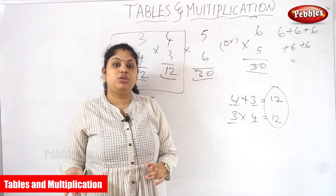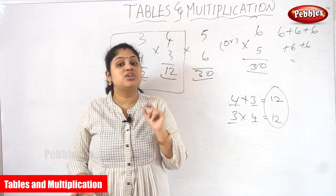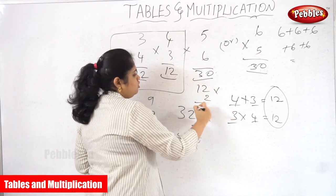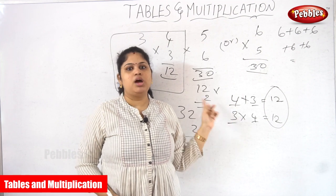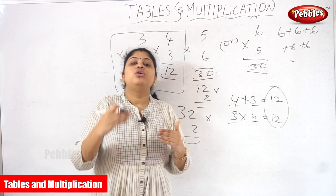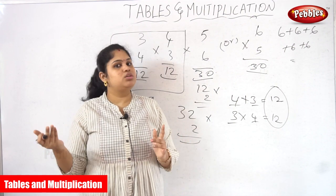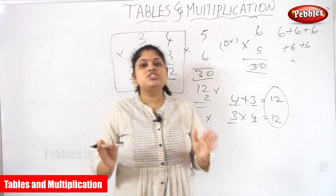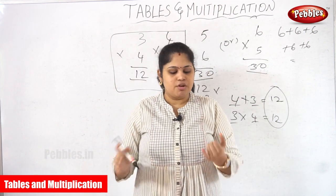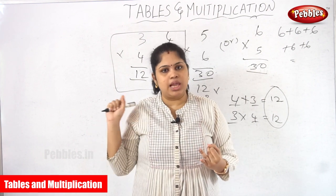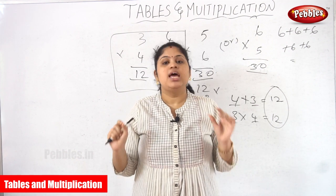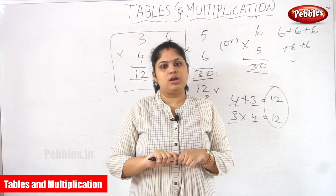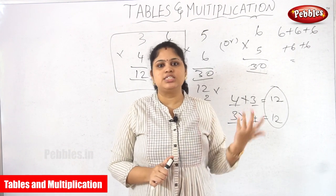We have now completed single digit multiplications. In the next class we are going to see 2-digit into 1-digit multiplication, such as 32 into 2 or 12 into 2. We will also see 2-digit into 2-digit combinations. Children, please be very clear about your tables from 2 to 11 — we have thoroughly learnt them using different methods and techniques. If you follow those techniques you will be clear about the tables.